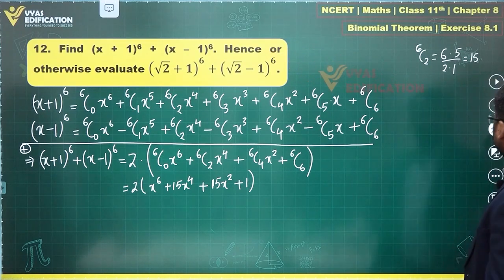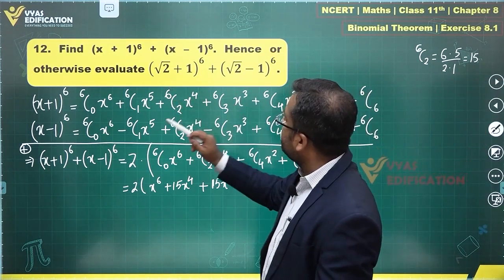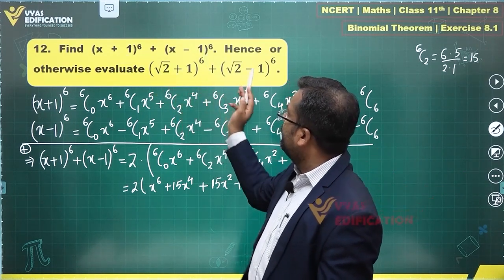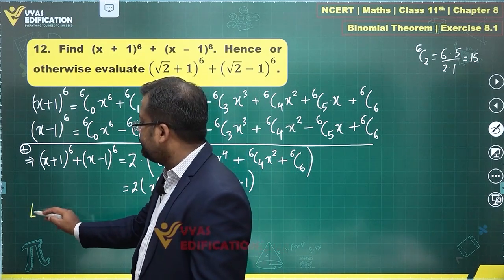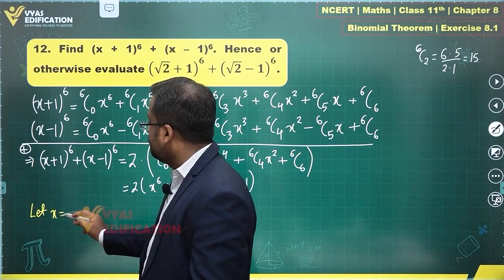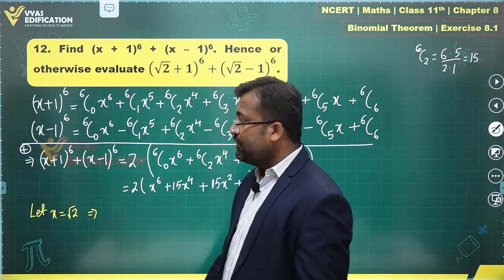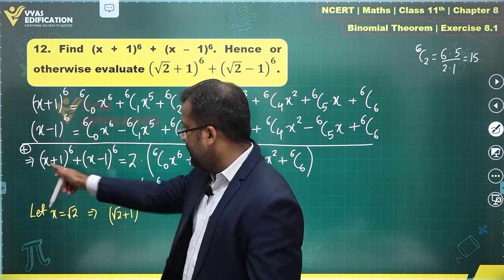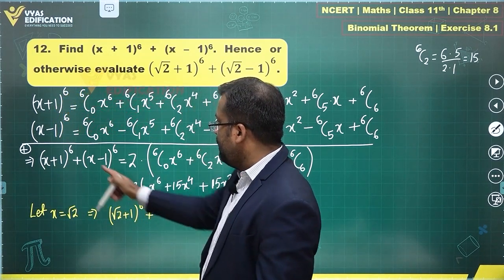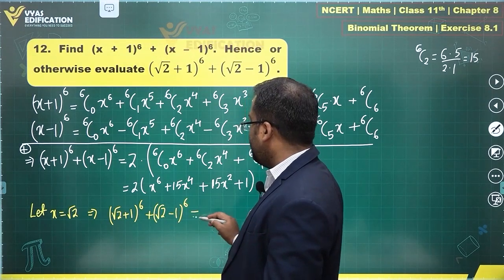There is another part to this question. What does that part say? We are supposed to find the value of this expression. So you replace x by √2 and you get this expression. So let x equal to √2 implies (√2+1)^6.